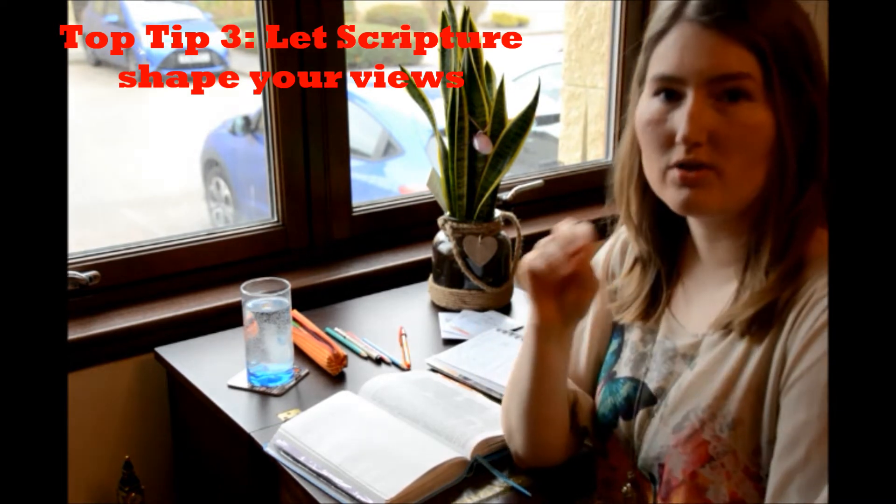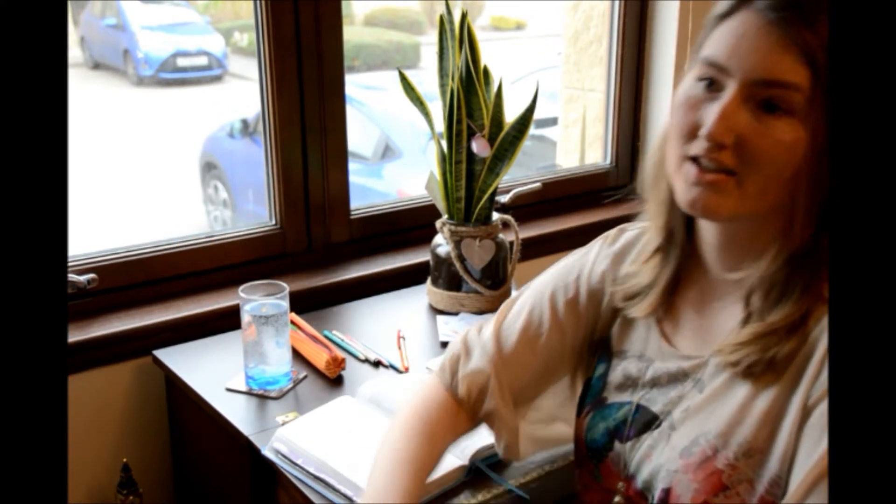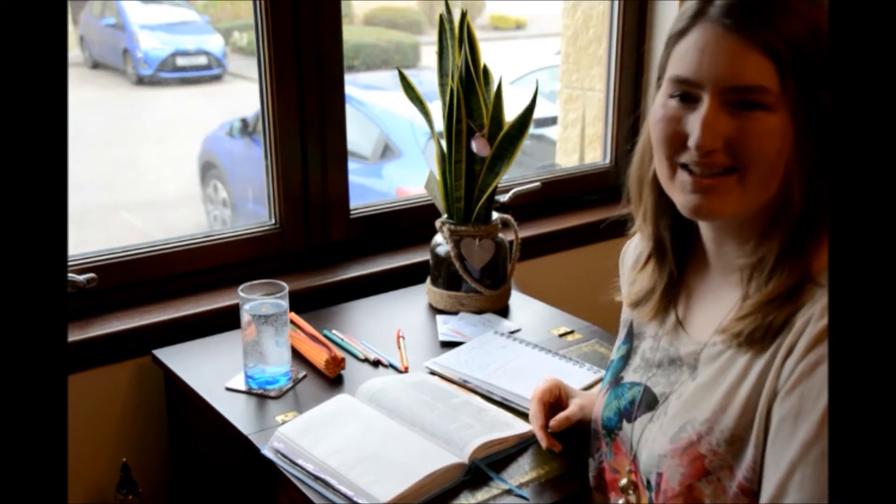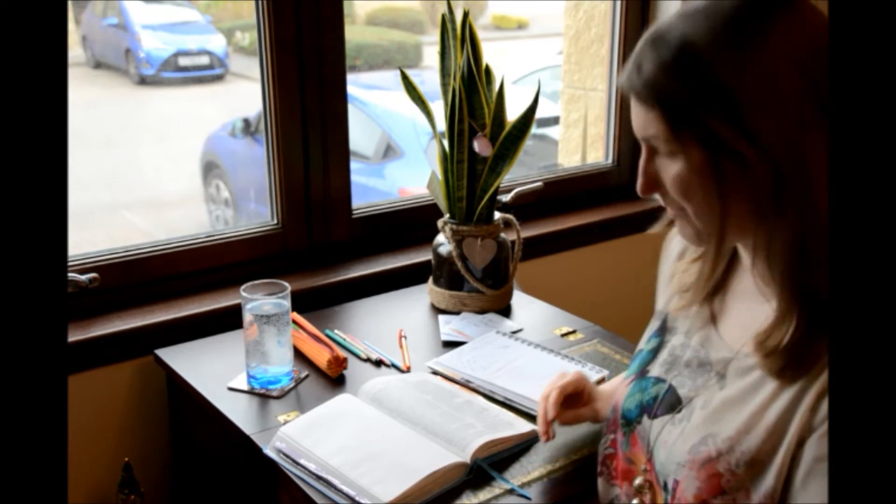Tip number three. Do not adjust Scripture to your views, but let your views be shaped by Scripture. This is crucial. Reading the Bible is not always comfortable because the Bible is like a mirror. And when you look in the mirror in the morning, you might not always like what you see. But the thing is, if you don't see the things that are wrong, you can't do anything about them. Therefore the Bible is like a mirror. It shows you what is wrong with you. It also encourages you, but it does do a lot of showing what is wrong with you. And you need to accept that to be able to do something about it, because realization is the first step to improvement. So don't adjust the Bible to your views, but adjust your views to the Bible. That can be painful sometimes, and that's what we call dying to self.